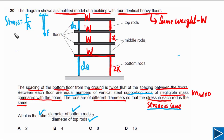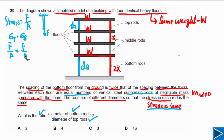For this question, the stress in the top rods and the bottom rods is the same. So we can write down the formula for both: for the top rods, stress equals F over A, and for the bottom rods, stress also equals F over A, where F represents the force acting on each set of rods and A represents their respective cross-sectional areas.